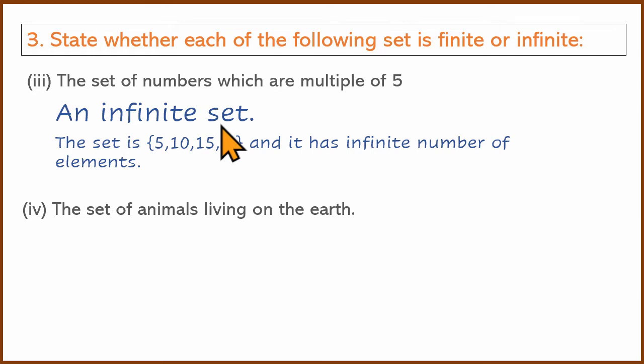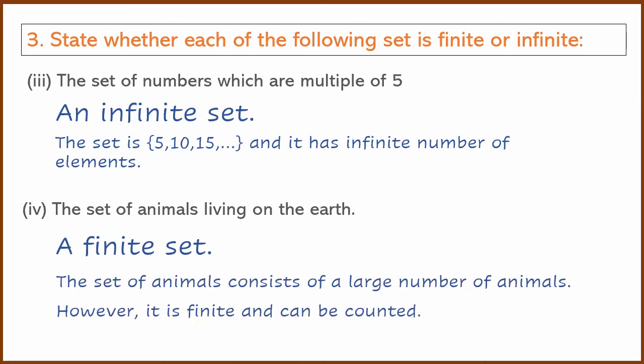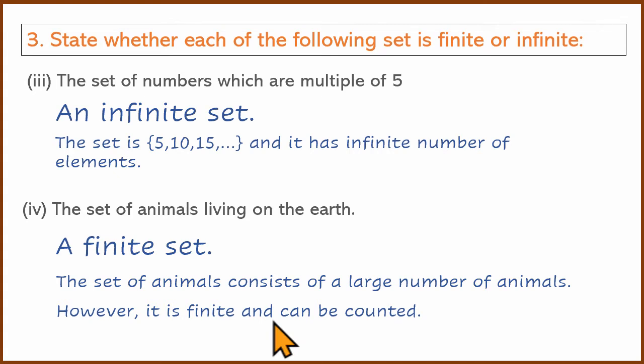This is an interesting question: Set of animals living on earth. Now, set of animals living on earth — you might think this is an infinite set. Counts are made, time is made, but finally a count is made. It is a large number of animals, but the set consists of a finite number of animals. There is no infinite number of animals — there is a finite number of animals.